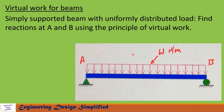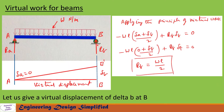To find reaction at B (R_B), let us give a virtual displacement of delta_B at B. The beam will assume this position AB prime. This displacement is delta_B, and at end A, delta_A equals zero.